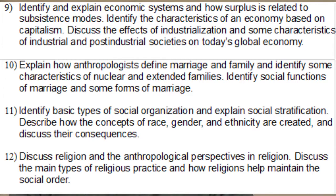Nine, identify and explain economic systems and how surplus is related to subsistence modes, identify characteristics of an economy based on capitalism, and discuss the effects of industrialization and characteristics of industrial and post-industrial societies on today's global economy. Ten, explain how anthropologists define marriage and family, identify characteristics of nuclear and extended families, and identify social functions of marriage and other forms of marriage. Eleven, identify basic types of social organization, explain social stratification, and describe how the concepts of race, gender, and ethnicity are created and discuss their consequences. Twelve, discuss religion and anthropological perspectives in religion, discuss the main types of religious practices and how religions help maintain the social order, and discuss how art influences culture.